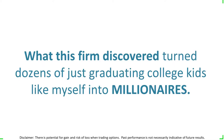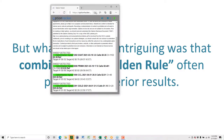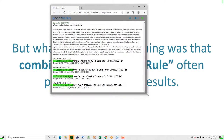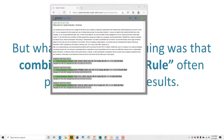What this firm discovered turned dozens of graduating college kids like myself into millionaires. Combining the golden rule often produced superior results. Four signals today — you couldn't have gotten these signals anywhere else in the world. You'd have to go through every one of 8,700 publicly traded companies — about 3,700 of them with options. This gives you the best potential four signals of the day. You can get into the last signal right now in GOLD at $1.10.